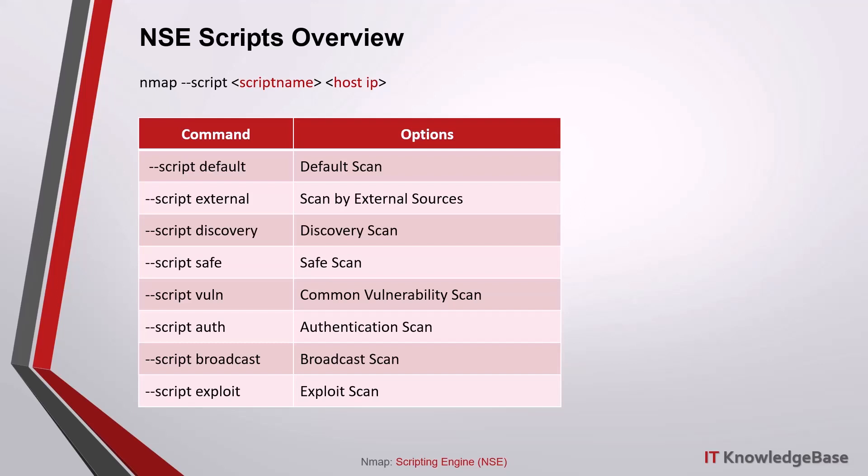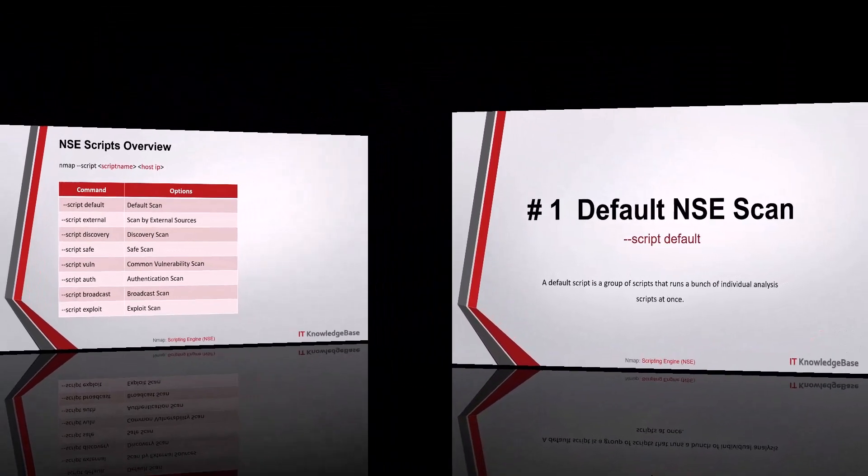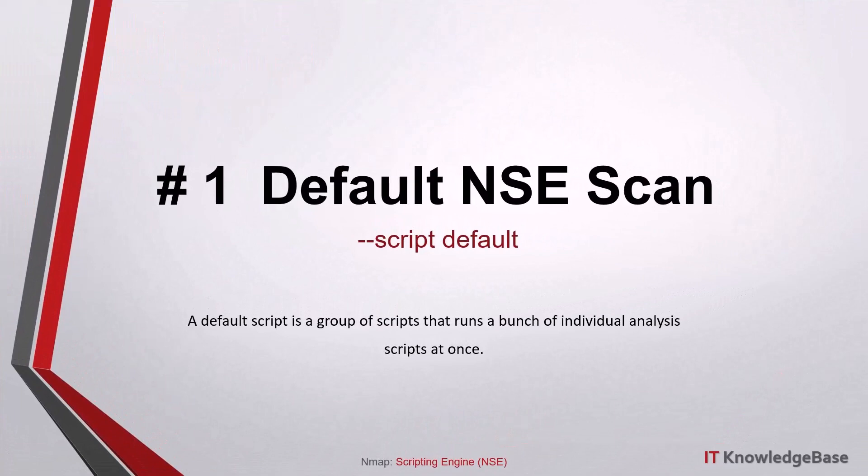--script broadcast scripts typically discover hosts not listed on the command line by broadcasting on the local network. Use the --script-args newtargets argument to allow these scripts to automatically add discovered hosts to the nmap scanning queue. --script exploit scripts aim to actively exploit vulnerabilities; examples include jdwp-exec and http-shellshock.